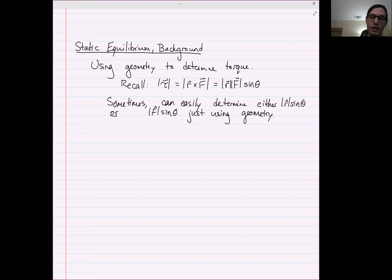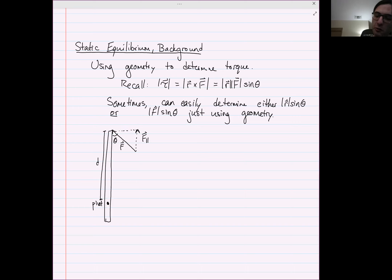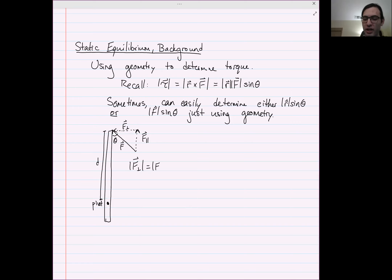For example, let's say we have a rod with a pivot here, and maybe there's a force F applied at some angle theta, with distance D. Then this vector would be our F-parallel and this vector would be our F-perp. The magnitude of F-perp — we've gone over this before — is equal to the magnitude of F times the sine of the angle.